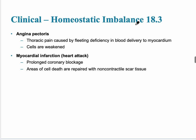A problem with these coronary vessels is that myocardial infarctions can occur. The symptom is thoracic pain caused by deficiency of blood delivered to the myocardium, called angina pectoris. This can lead to a myocardial infarction — a heart attack — caused by a prolonged coronary blockage due to a thrombus, which you learn about in the blood chapter. It can lead to ischemic heart disease, with symptoms including chest pain and referred pain radiating to the medial side of the arm.